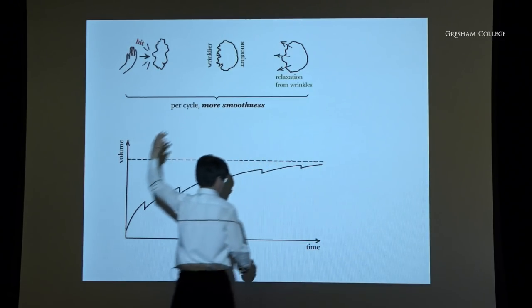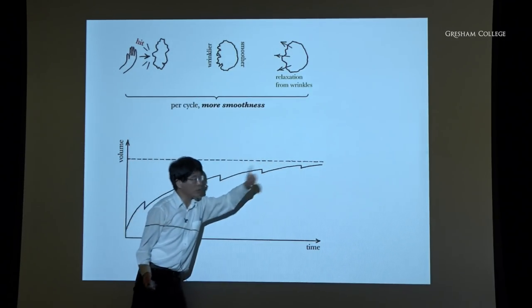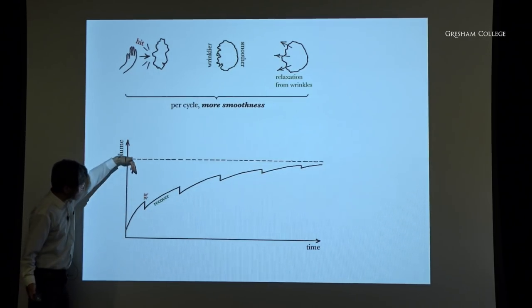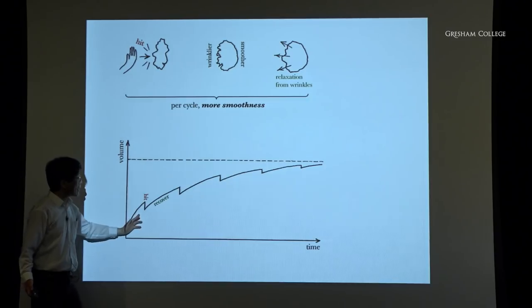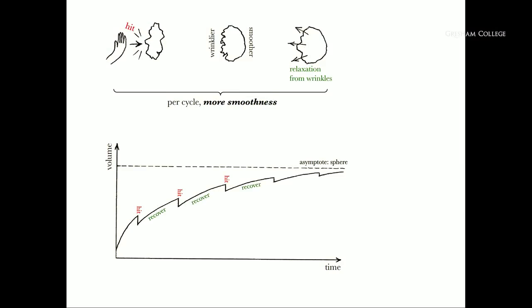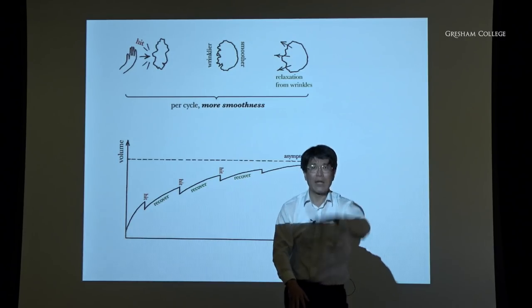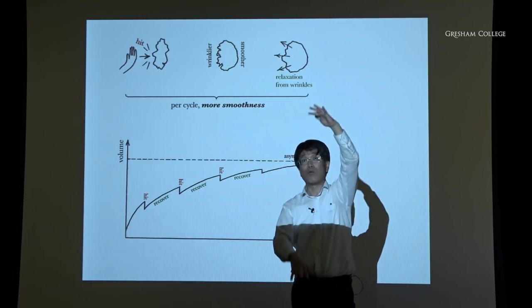If you plot volume as a function of time, with hits at discrete times, right after each hit the volume drops. Then you have a recovery phase, and you asymptote toward the spherical shape. This is quite extraordinary because throughout mathematical sciences there are many situations where multiple different scales must be taking place — large, medium, small, microscopic — all talking with one another.